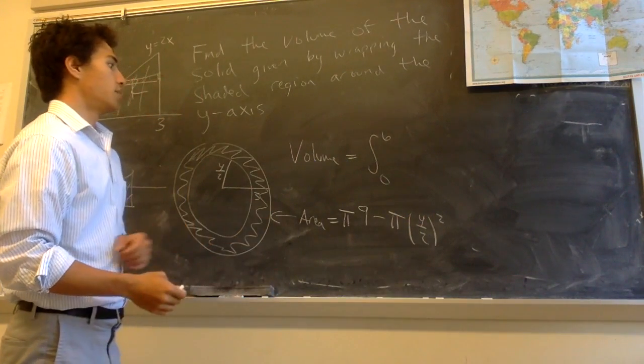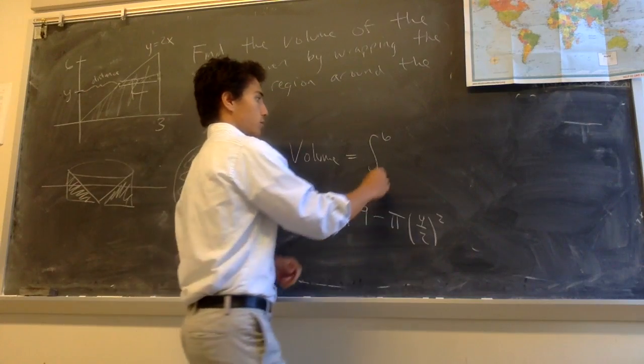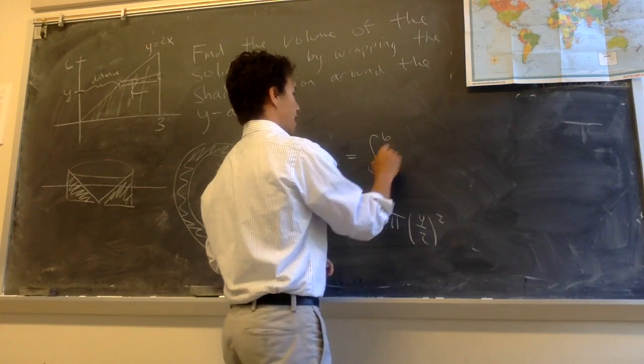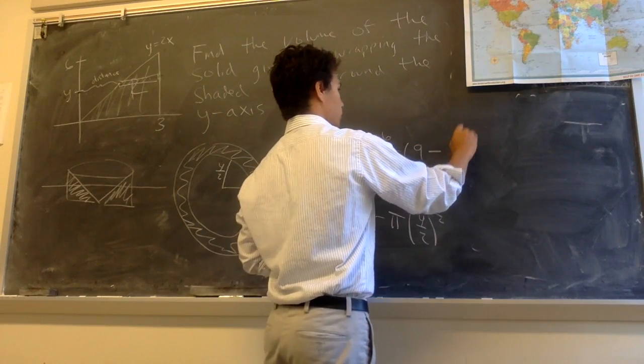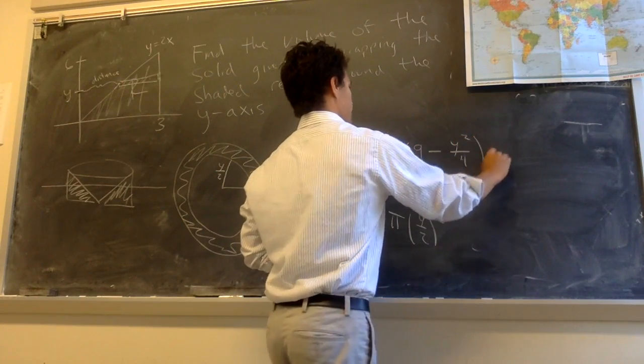So the whole volume is going to be given by the integral of this with respect to y. So I'll factor out the pi and you get 9 minus y squared over 4 dy.